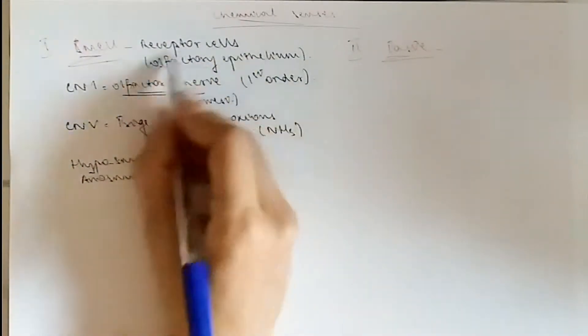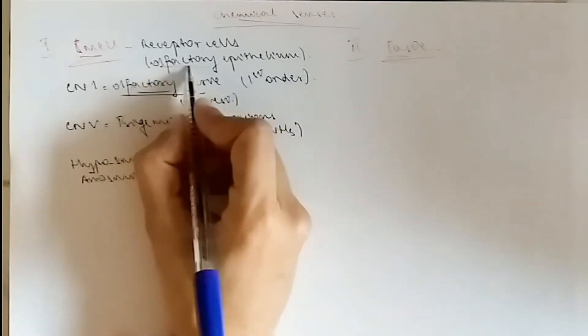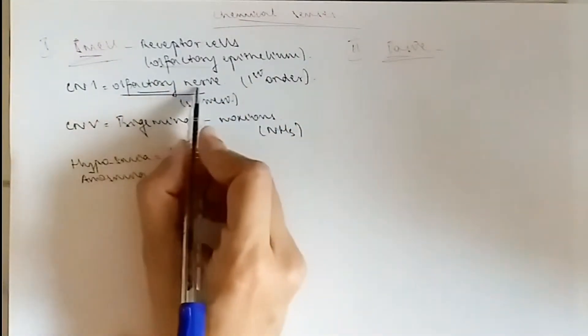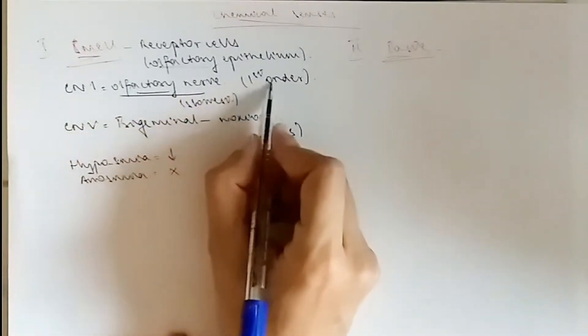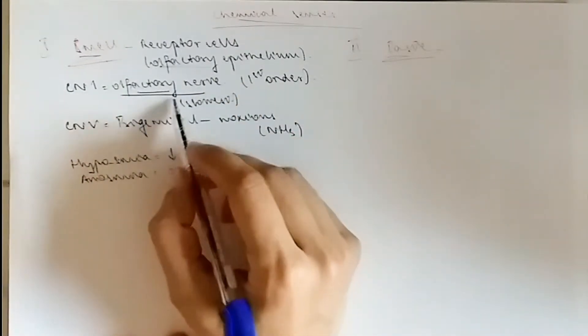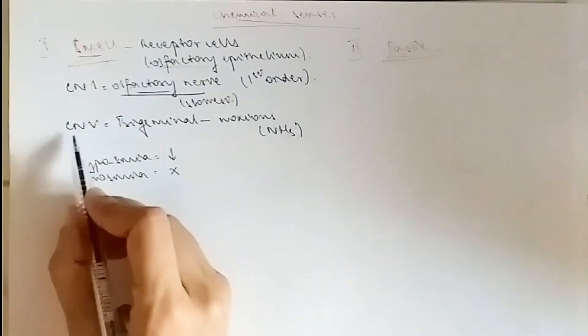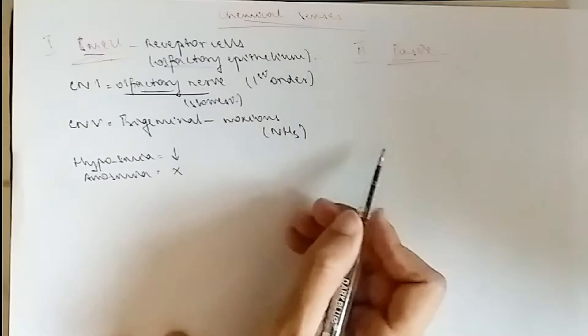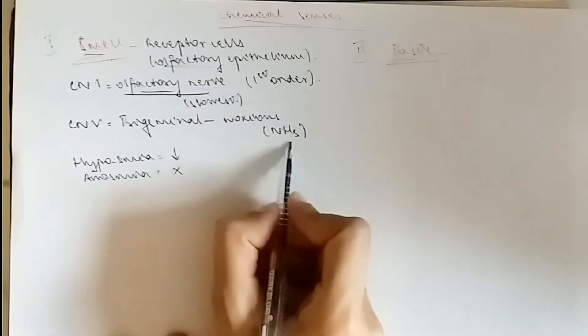You've got the receptor cells located in the olfactory epithelium, obviously in the nose, and the olfactory nerve is the first cranial nerve. It is the first order neuron, the smallest, and has the slowest conduction. It's also innervated by the fifth cranial nerve, which is the trigeminal nerve, but that is only for painful and noxious stimuli such as ammonia.